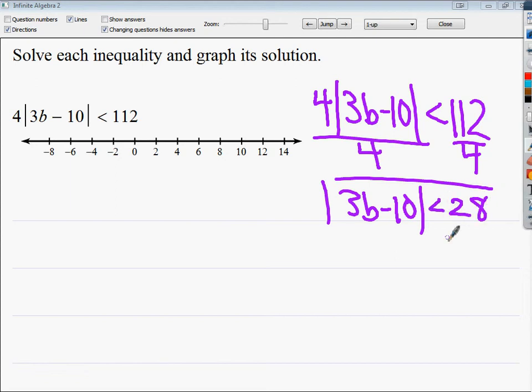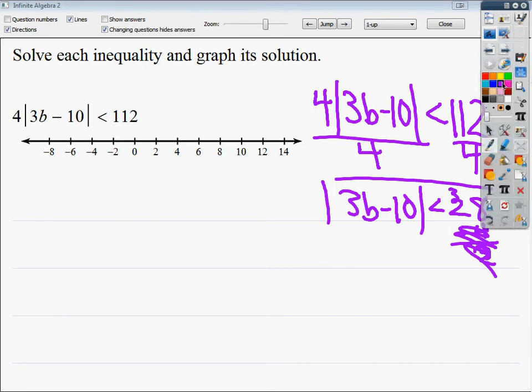So instead, I'm going to divide the whole thing by 4. It gives me 3b minus 10 and then 112, and I'm trying to do it in my head, and it's a really stupid process, 28. So 3b minus 10 is less than 28 is basically where I'm going. From here, you can split it into 3b minus 10 is less than 28, 3b minus 10 is greater than negative 28. So from there, the split is exactly the same.